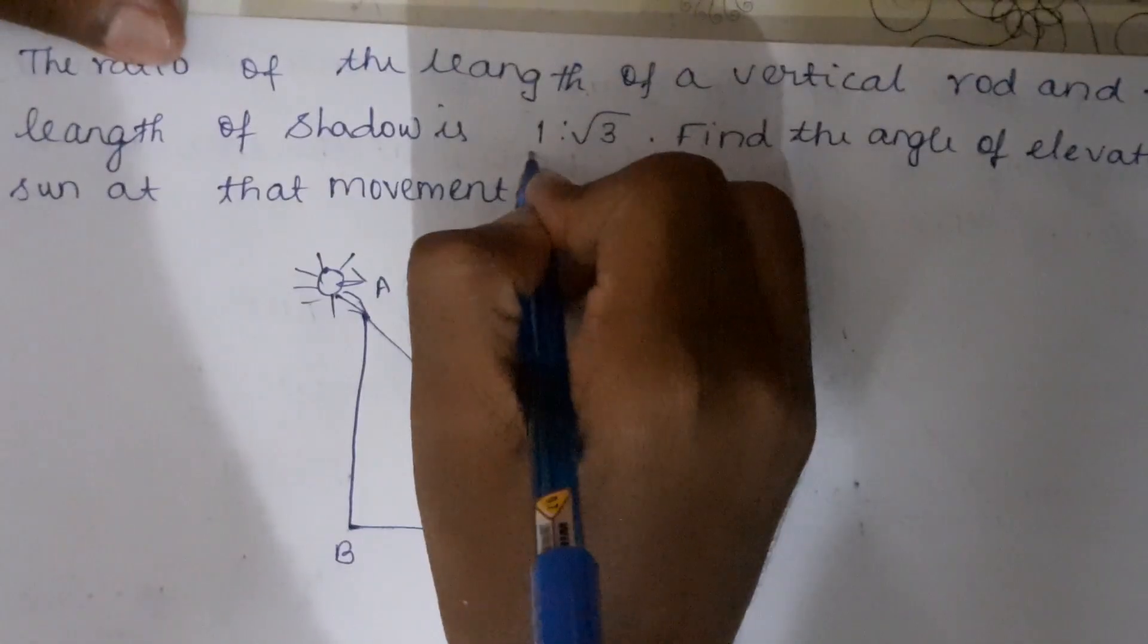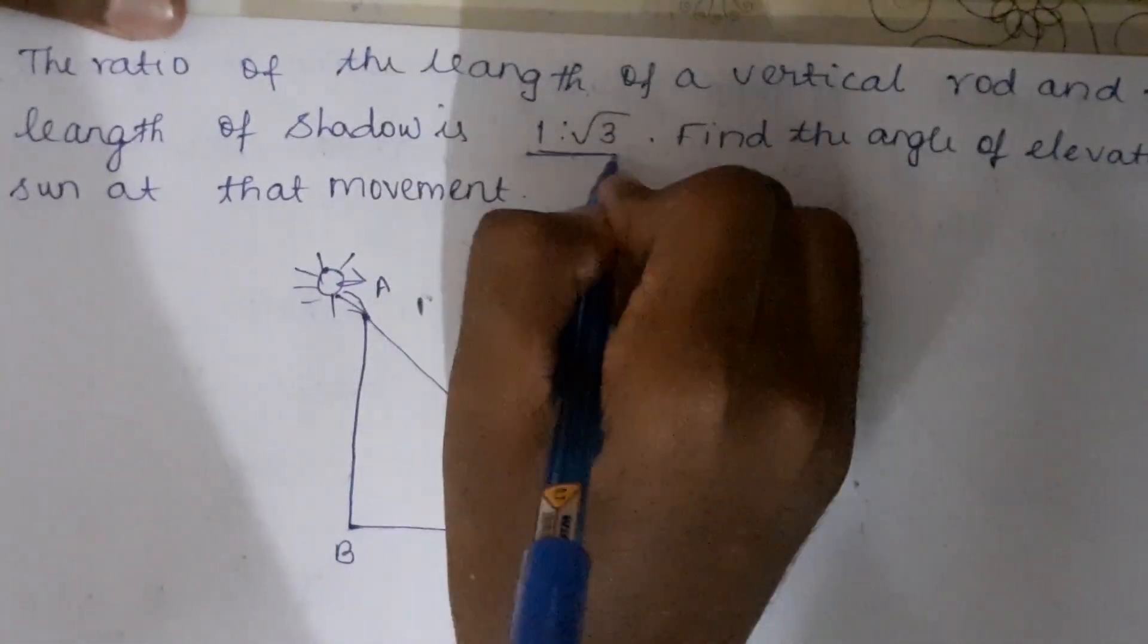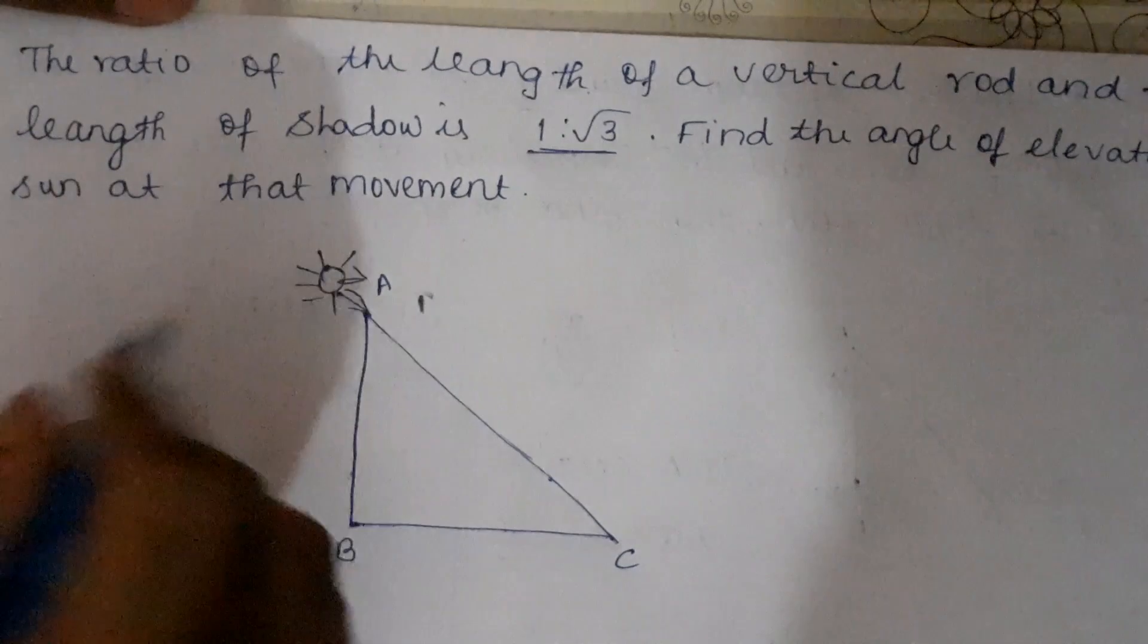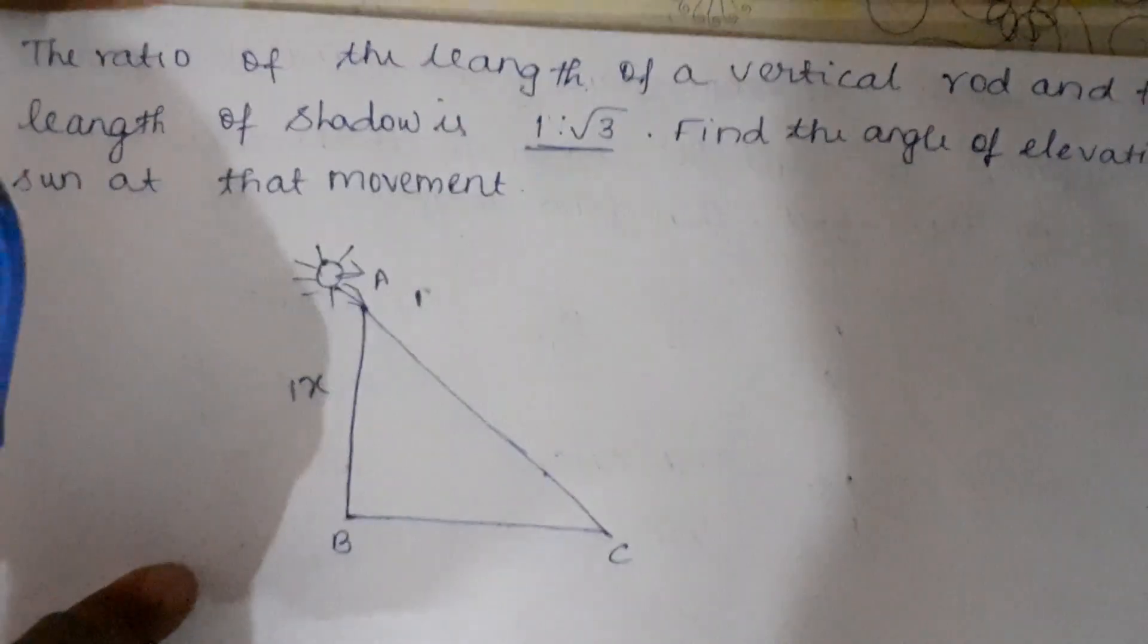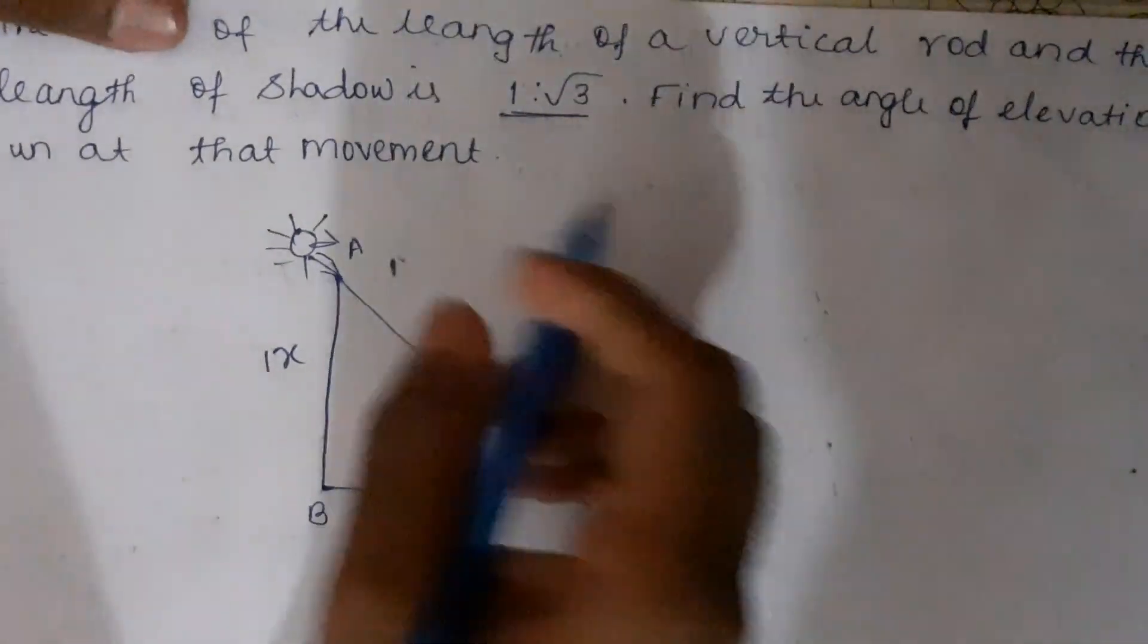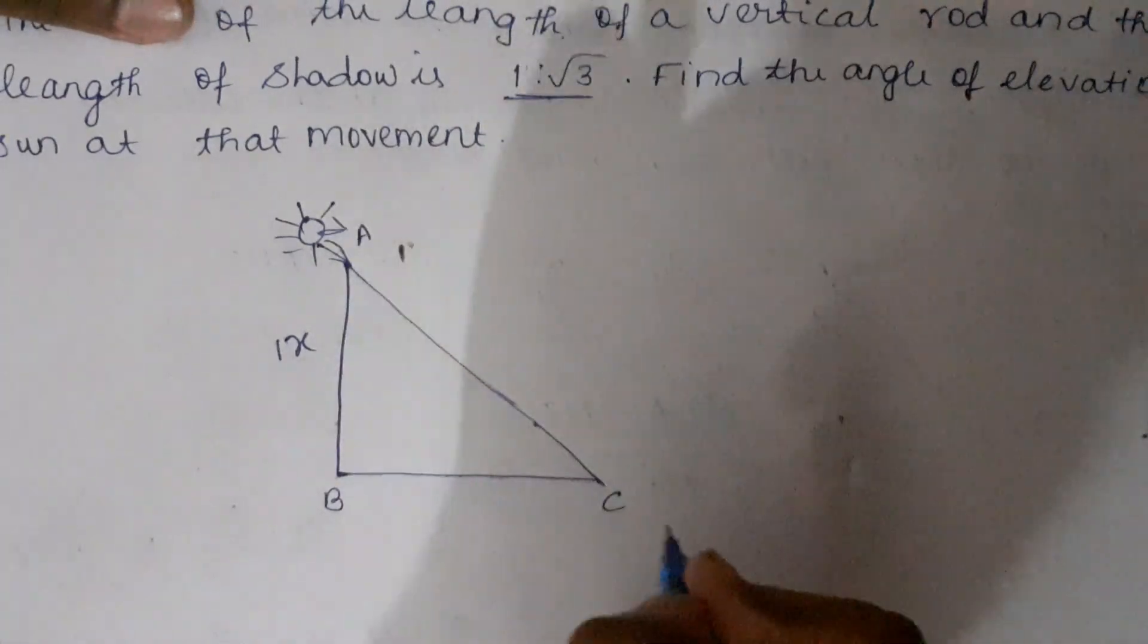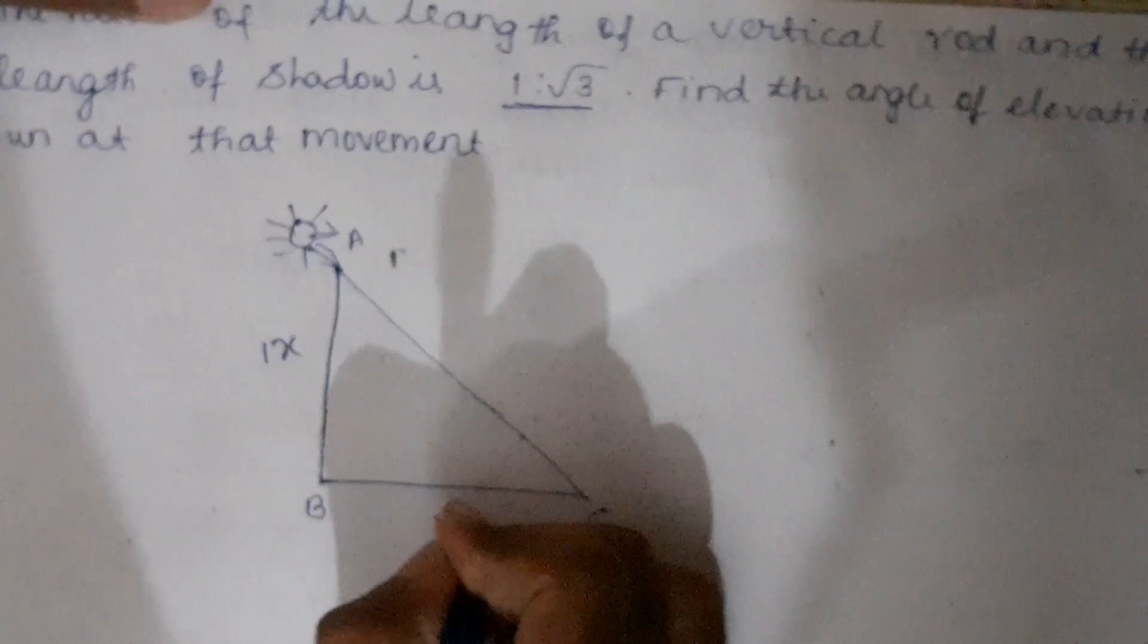According to the question, the ratio of length of rod and the length of shadow is 1 is to root 3. So length of rod is 1x. We don't know the other value, it may get cancelled, so we will write root 3x.